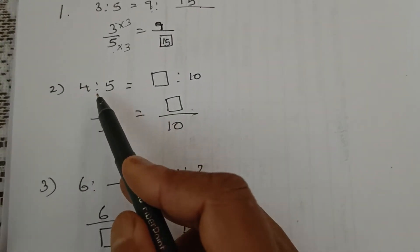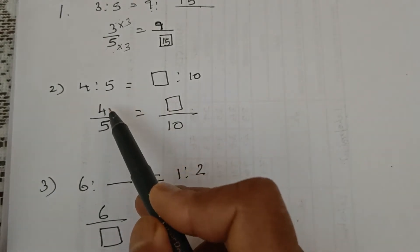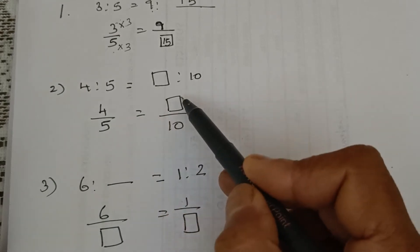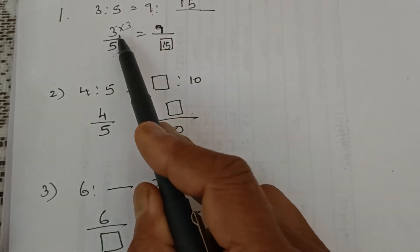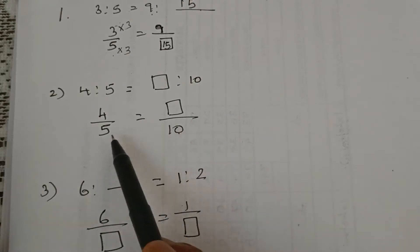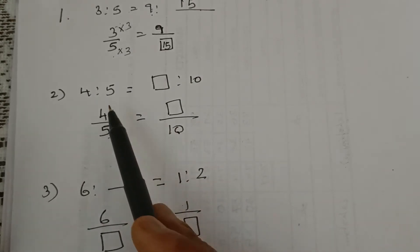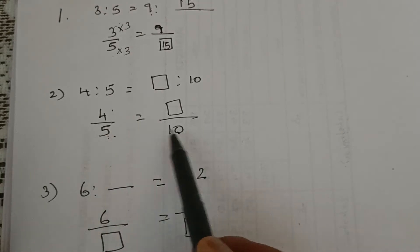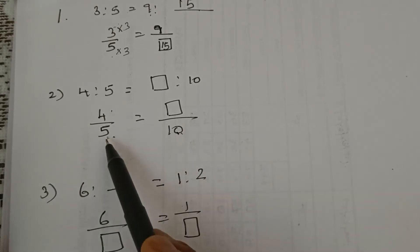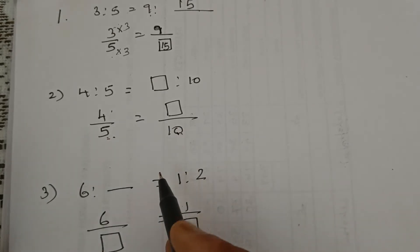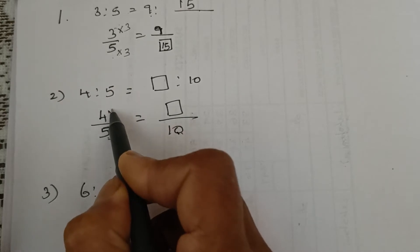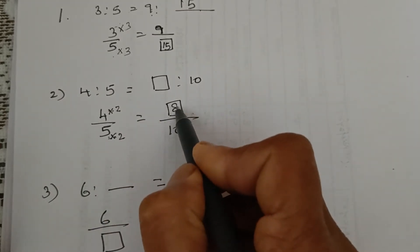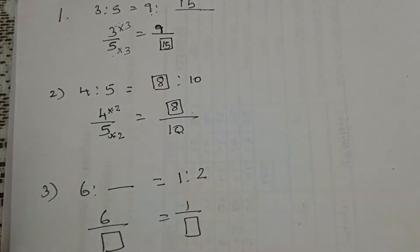Next: 4 is to 5 is equal to dash is to 10. That is, 4 by 5 is equal to the unknown by 10. Now, where do you have both the numbers? In the first sum, we had both numerators, so we compared the numerators. Here we have two denominators, so we compare the denominators. 5 and 10 — tell 5 tables till you get 10. 5 twos are 10. So the denominator is multiplied by 2. Therefore, multiply the numerator also by 2. 4 twos are 8. So 4 is to 5 is equal to 8 is to 10.